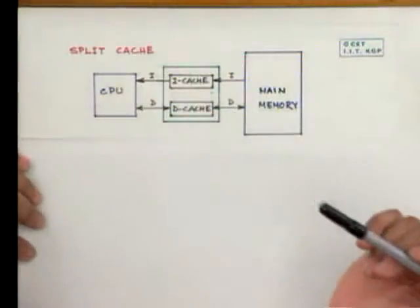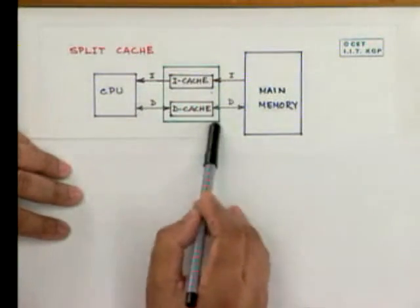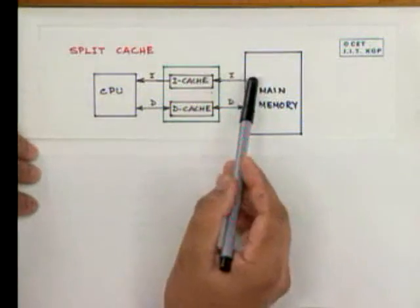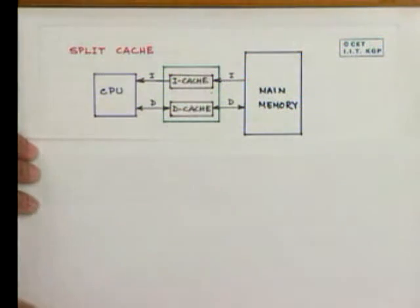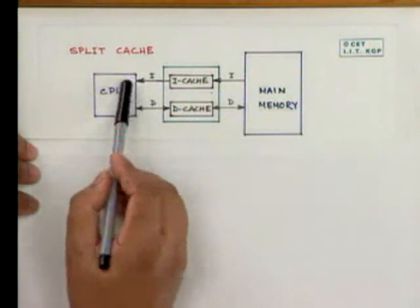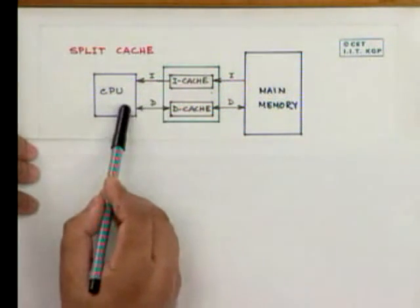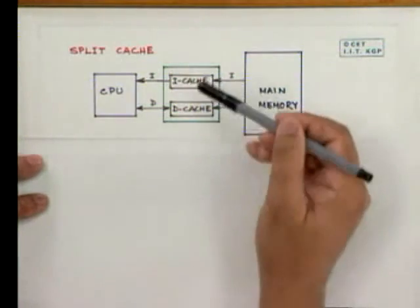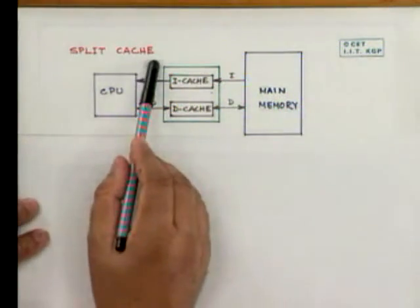Two more things should be discussed. One is a split cache. Here we have a CPU, a cache memory, and a main memory. Almost all contemporary systems use two caches: one is called the instruction cache (iCache) and one is called the data cache (dCache). Instructions are brought from main memory into the iCache, and data is brought into the dCache. The CPU takes instructions from the iCache and data from the dCache. The mapping can be direct mapping, associative mapping, or any other, but two caches are maintained. We call this a split cache.